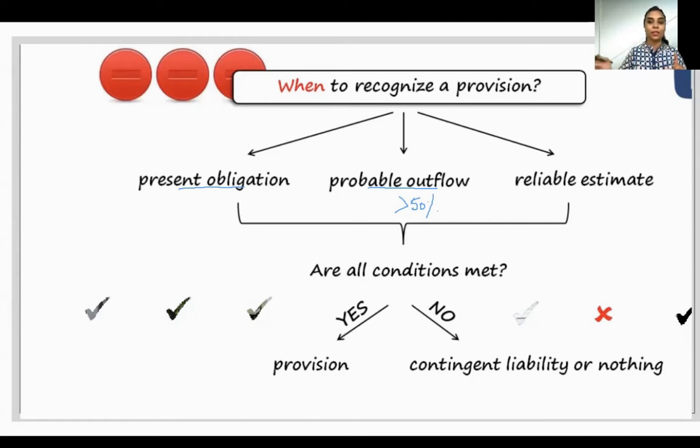So if you satisfy these three things, then you will make it a provision. If any of these things is not satisfied, then it might be a contingent liability or it might be nothing. You won't be showing it in the books at all. So what is contingent liability? We will be seeing in the next video.